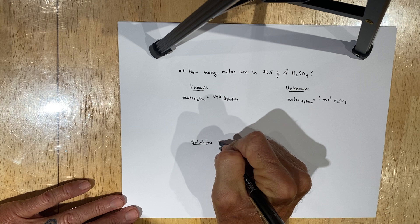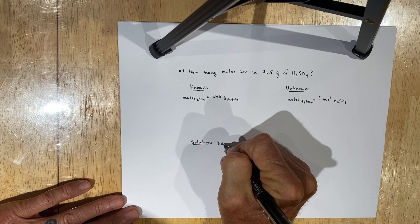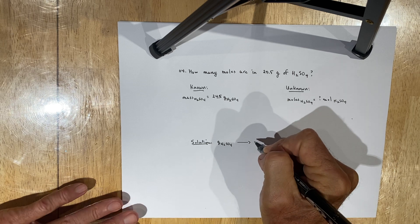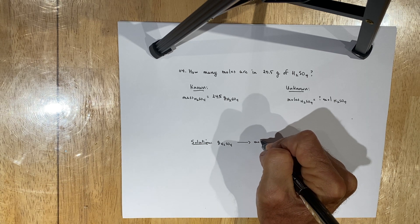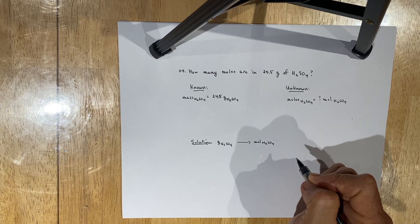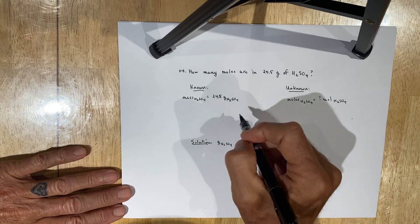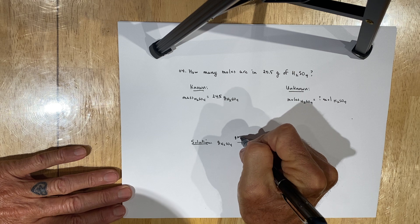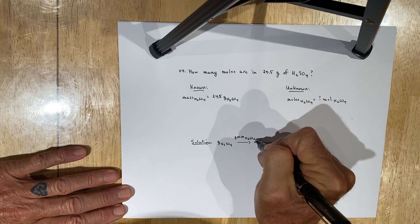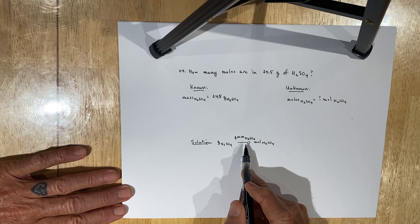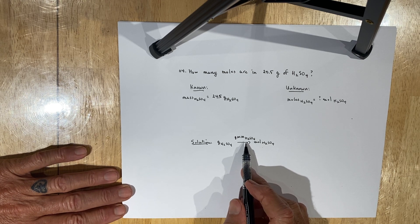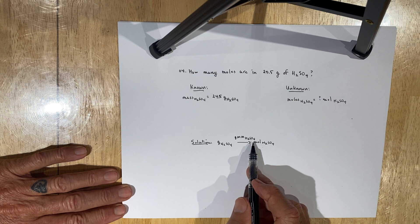In your solutions pathway, you have to convert between grams of H₂SO₄ to moles of H₂SO₄. The bridge from grams to moles is going to be the gram molecular mass of H₂SO₄. So the first thing you need to do is calculate the gram molecular mass of H₂SO₄.